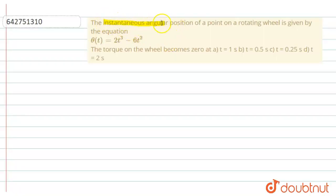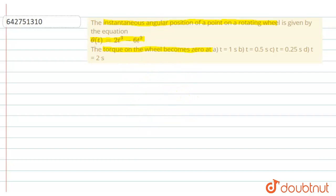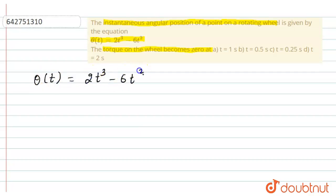In this question, it is given that the instantaneous angular position of a point on a rotating wheel is given by θ(t) = 2t³ - 6t². We need to calculate at which time the torque on the wheel becomes zero.